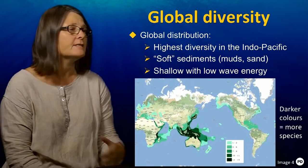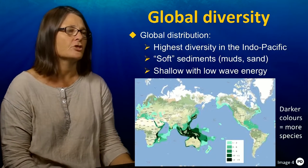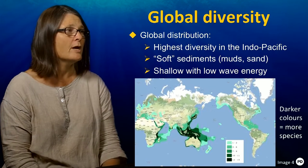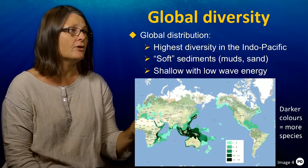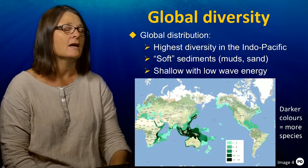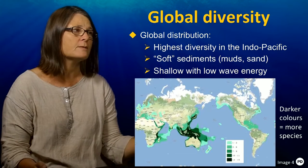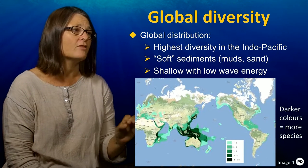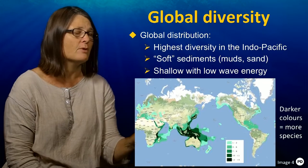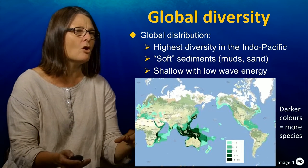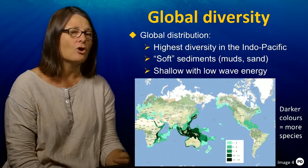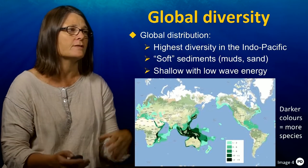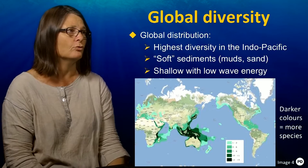Globally, seagrasses are distributed all over the planet in shallow water except for the poles. You won't see seagrasses at the North and South Pole, but you do see them in temperate environments. The lighter colours on this map indicate low seagrass diversity, with fewer species in temperate regions compared to the tropics. The highest number of species occurs in the same location as corals and mangroves — the coral triangle associated with Indonesia, Papua New Guinea, and Northern Australia.